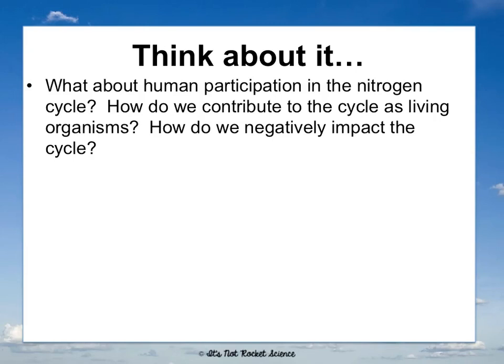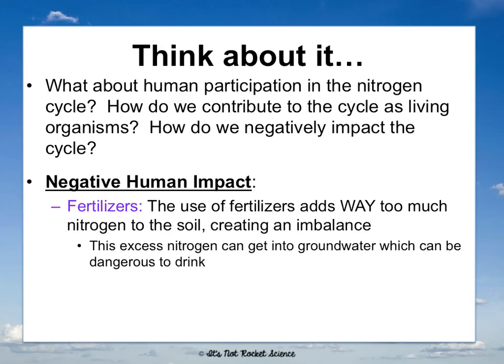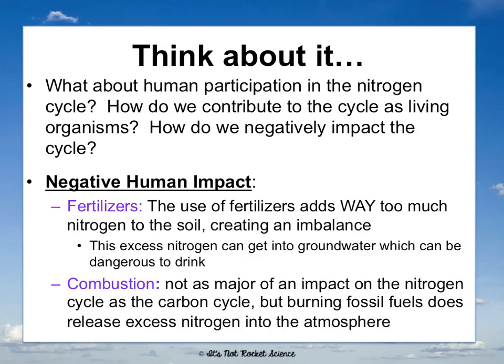Our main negative human effect on the nitrogen cycle is fertilizers. Fertilizers — if you look at them at a Lowe's or Home Depot — advertise that they're nitrogen-rich, nitrate-rich, or ammonia-rich. Fertilizers add way too much nitrogen to the soil, which creates an imbalance, and this excess nitrogen can get into groundwater which can be dangerous to drink. Also, combustion — burning fossil fuels does add nitrogen to the atmosphere, though nitrogen is in smaller amounts in fossil fuels than carbon.